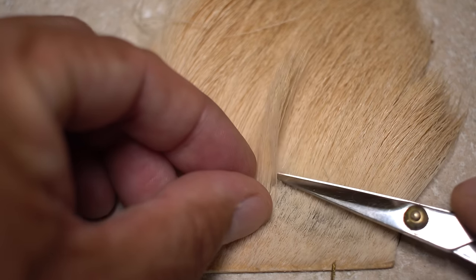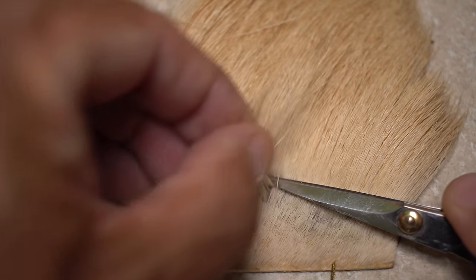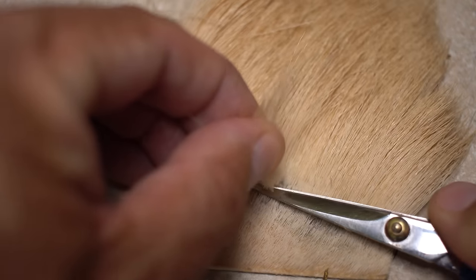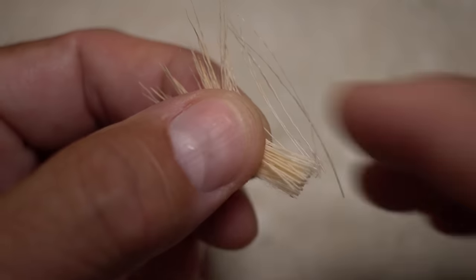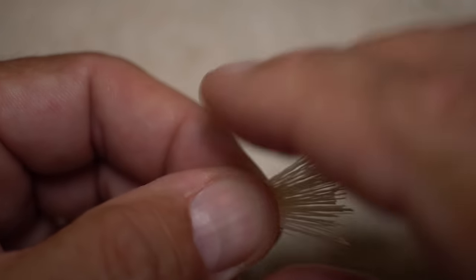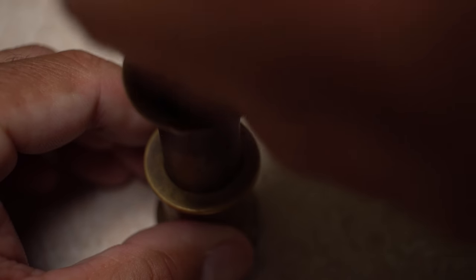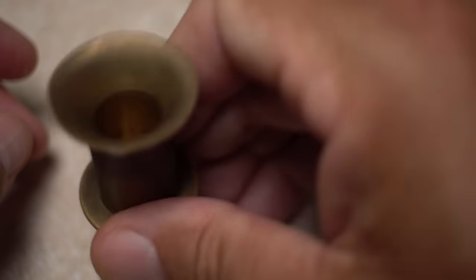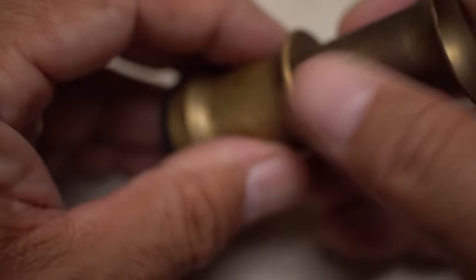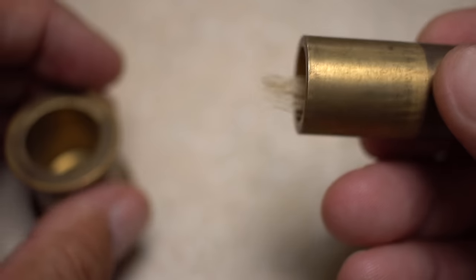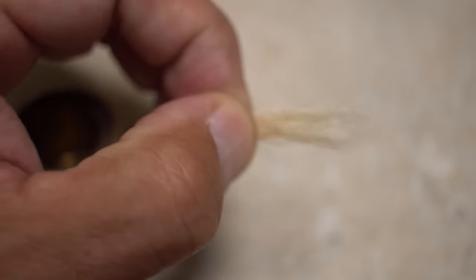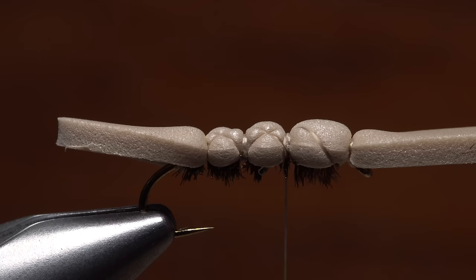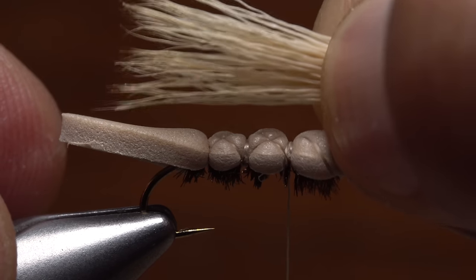For the fly's wing I'm going to use bleached elk hair that's about an inch and a quarter in length. Snip a small clump free from the hide and strip out any short hairs and under fur. Place the clump tips first into a stacker and give it a good stacking. Separate the stacker so you can grip the hair tips with your left hand and then pass the butt ends to your right. This will allow you to measure out a wing that extends just short of the back edge of the foam body.